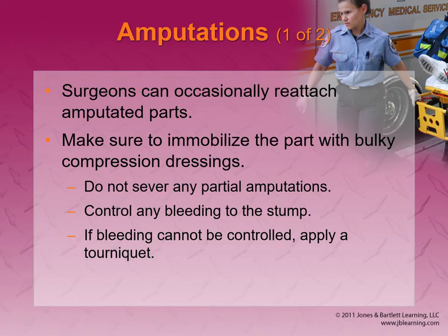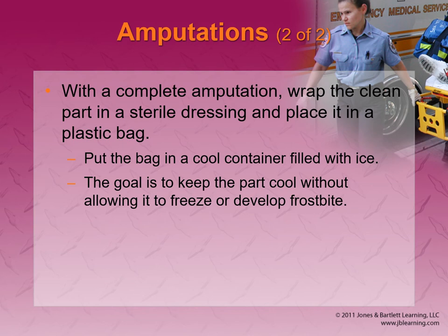Amputations — surgeons can occasionally reattach amputated parts, and there's more and more technology every day that allows this. If there is an amputated part, we want to take it to the hospital with us. Wrap the part in a clean, sterile dressing, place it in a plastic bag, and put that in a cool container filled with ice to keep it cool. What we do not want to do is put it directly on the ice, because you can literally give an amputated arm frostbite — keep it cool, but not in the ice.